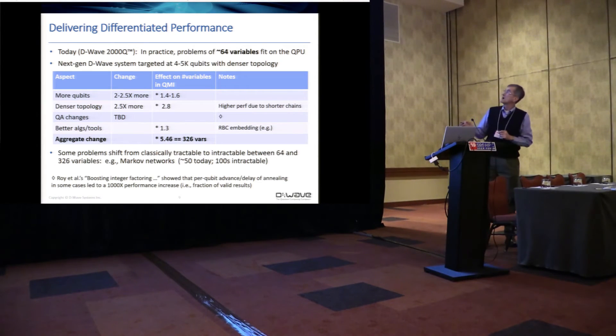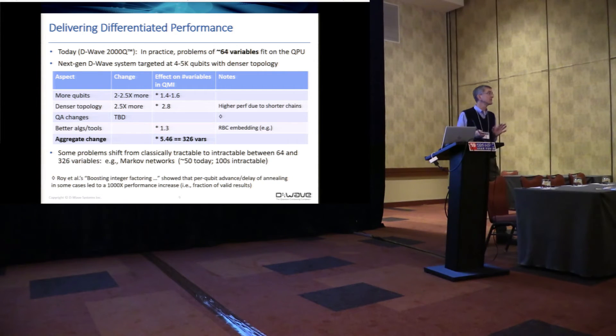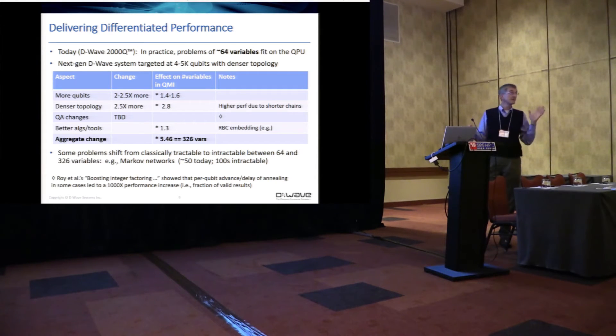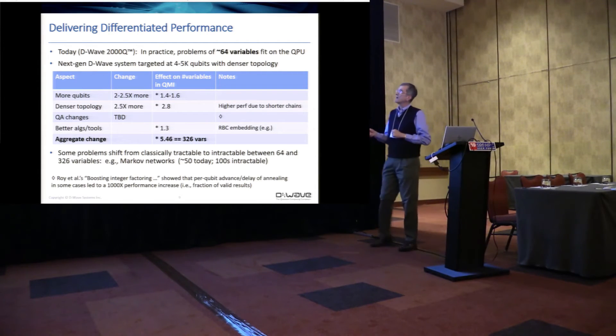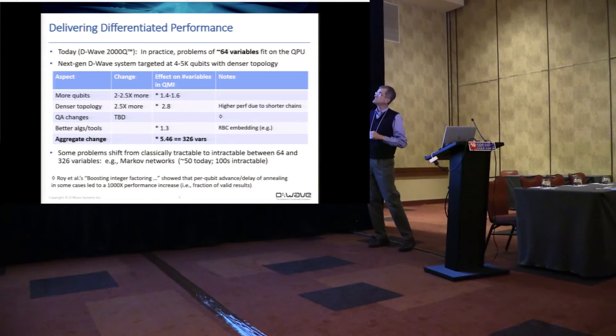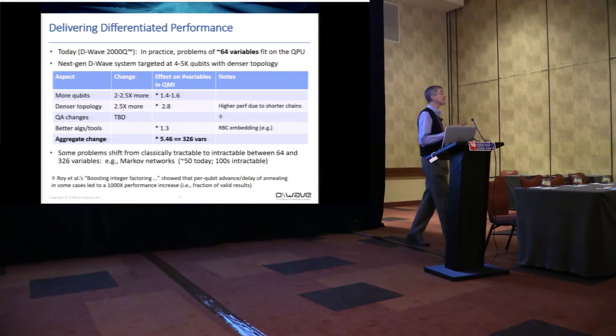So today, our system, D-Wave 2000Q, 2000 qubits in practice problems of about 64 variables fit on the QPU. So we've already talked publicly about a next generation system targeted at four to 5,000 qubits with a substantially denser topology. So how does this 64 variables grow on our next generation system? We have more qubits, the change there is expected to be two to two and a half X. So the effect on the number of variables in the QMI is about multiplied by 1.4 to 1.6. We have a denser topology, two and a half times denser that increases the number of variables by about a factor of 2.8.